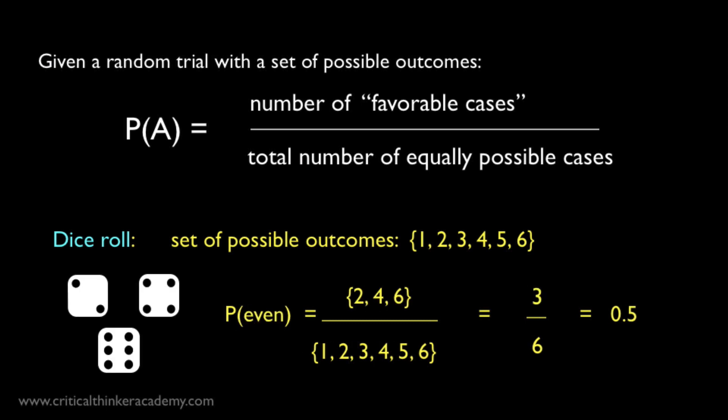If we want to know the probability of rolling an even number, then our situation is a bit different. Now our favorable cases include three of the six possible outcomes, 2, 4, and 6, which are the even numbers. So the probability is just 3 out of 6, or one-half.